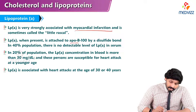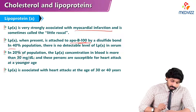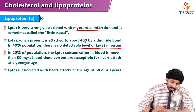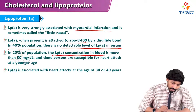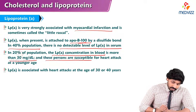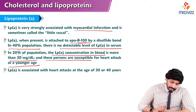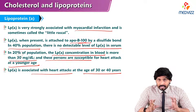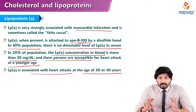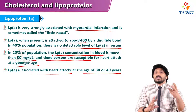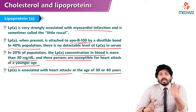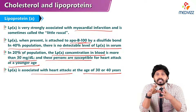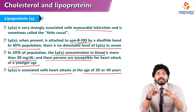Lipoprotein(a), when present, is attached to ApoB100 by a disulfide bond. In 40% of the population, there is no detectable level of lipoprotein(a) in serum. In 20% of the population, Lp(a) concentration in blood is more than 30 milligrams per deciliter, and these persons are susceptible to heart attack at a younger age. Lipoprotein(a) is associated with heart attacks at the age of 30 or 40 years. Because the protein on top of LDL is ApoB100, lipoprotein(a) binds to ApoB100 via disulfide linkage, starting to sediment the LDL.